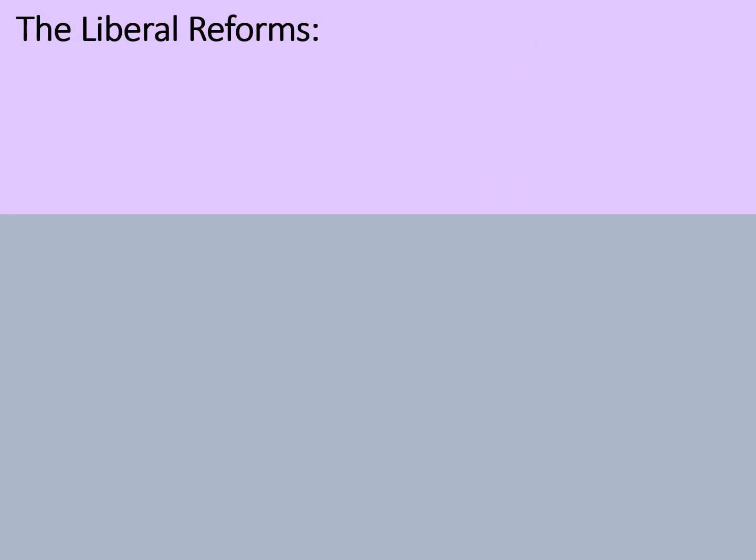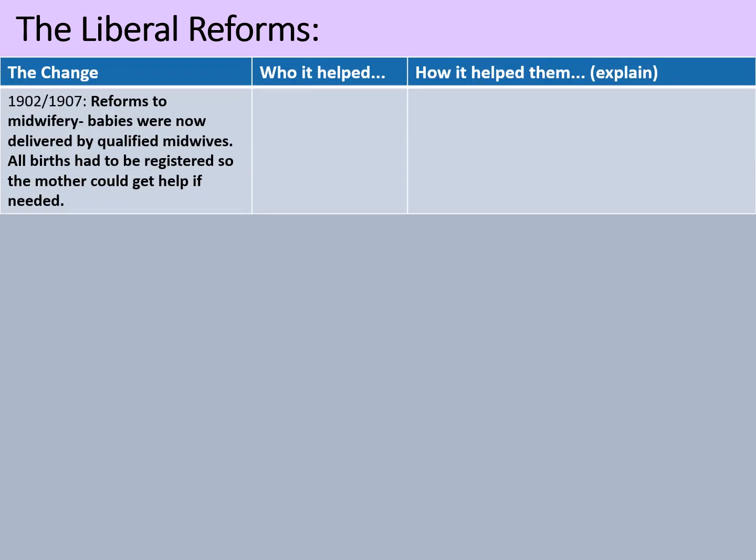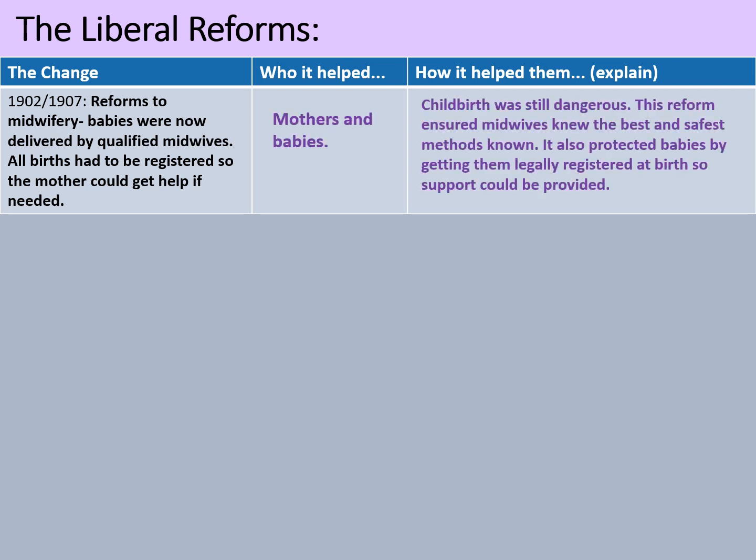So what were the liberal reforms and what did they introduce? We're going to look at a series of changes, who they helped and how. One of the earliest changes between 1902 and 1907 — slightly predating the 1906 election — were reforms to midwifery. Babies were now delivered by qualified midwives. All births had to be registered so that the mother could get help if needed and that the baby could not just disappear. This reform ensured that midwives knew the best and safest methods, and protected babies by getting them legally registered at birth so that support could be provided and they couldn't just be abandoned or mistreated.